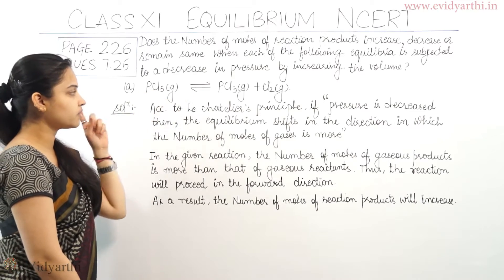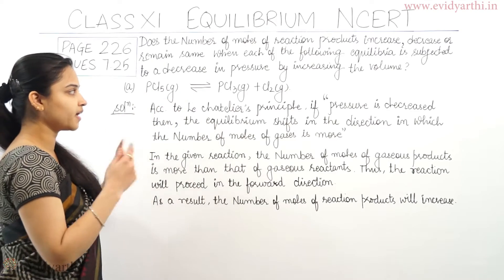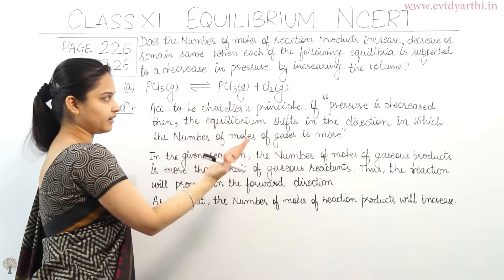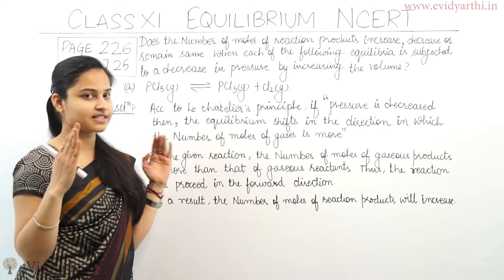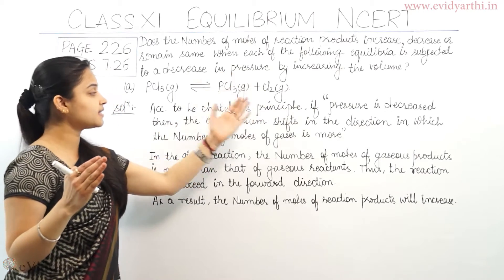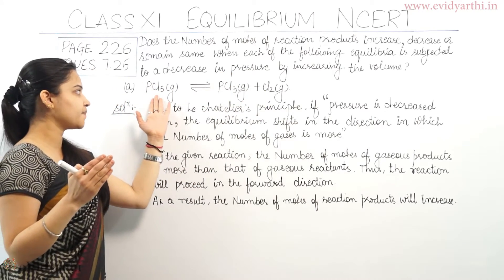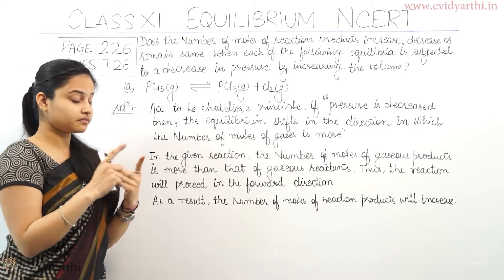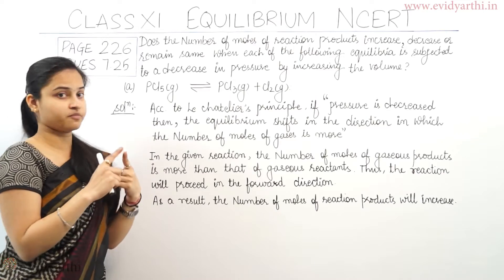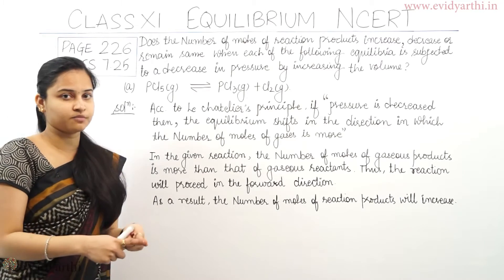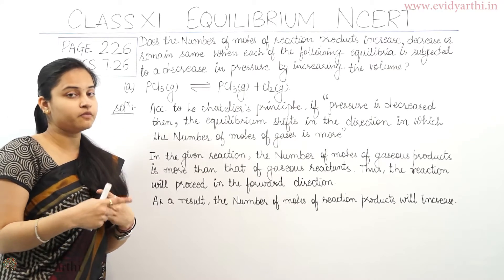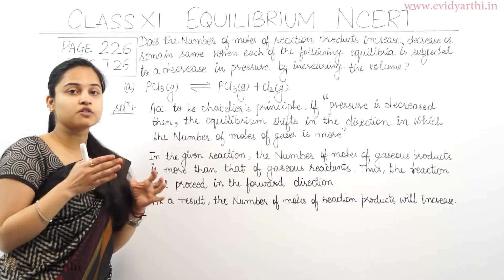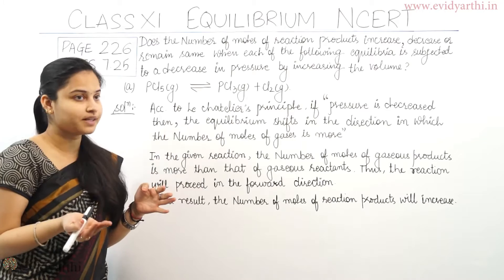Now in the given reaction — PCl5(g) ⇌ PCl3(g) + Cl2(g) — the number of moles of gaseous species is more on the product side: one and two, whereas in the reactant side the number of moles of gaseous species is one. Since the number of moles of gaseous product is more, the equilibrium will shift in the forward direction.